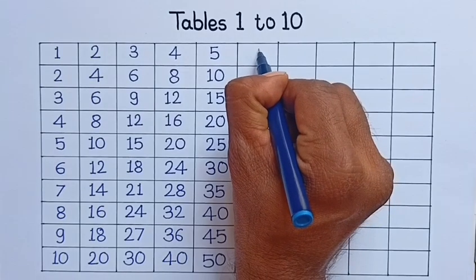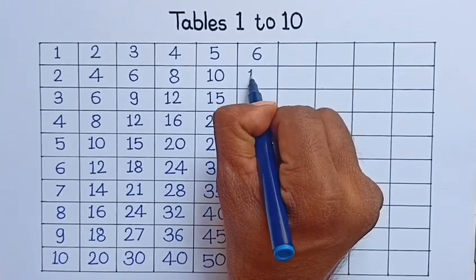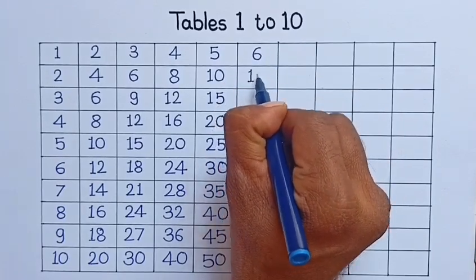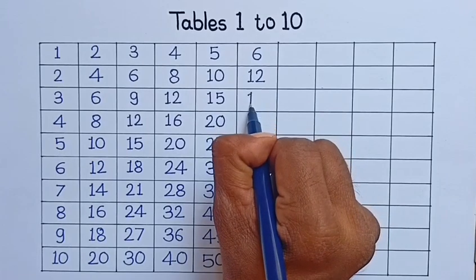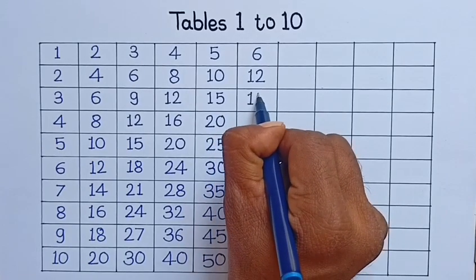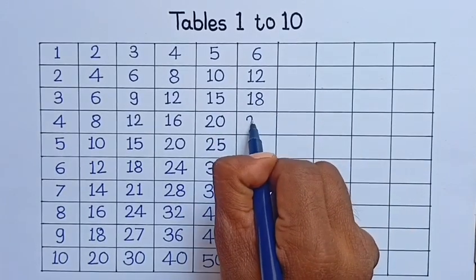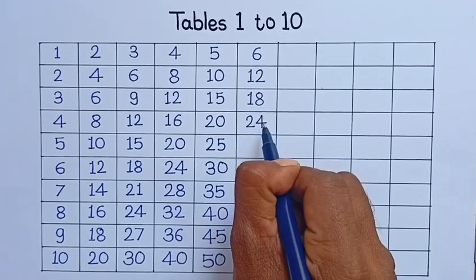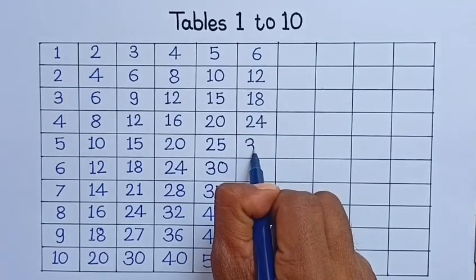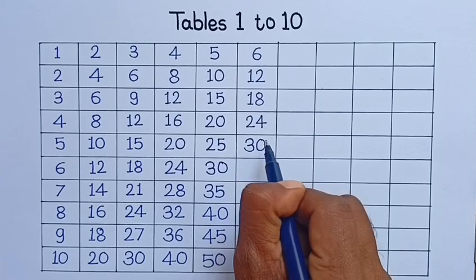6, 1 is 6. 6, 2 is 12. 6, 3 is 18. 6, 4 is 24. 6, 5 is 30.